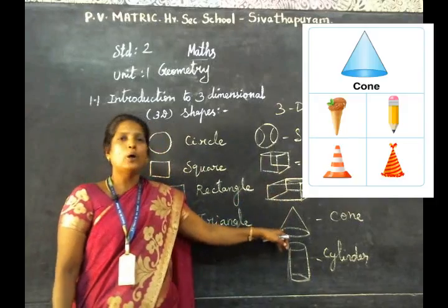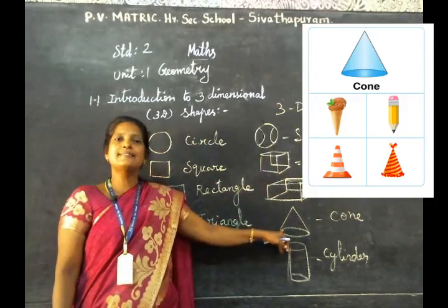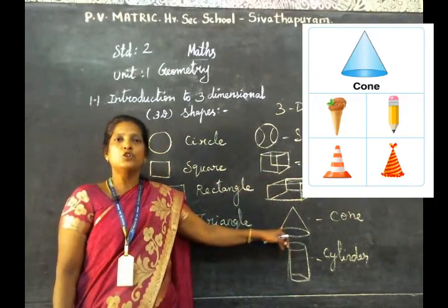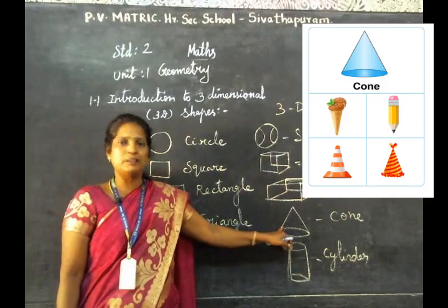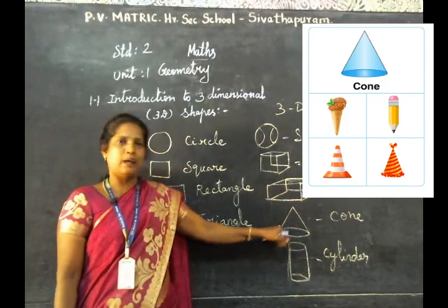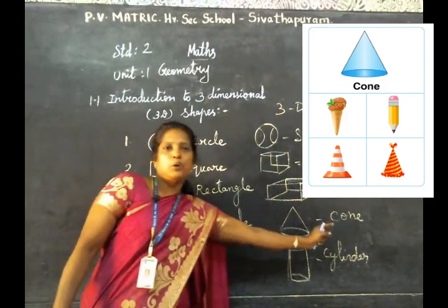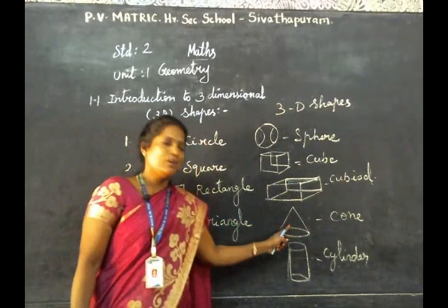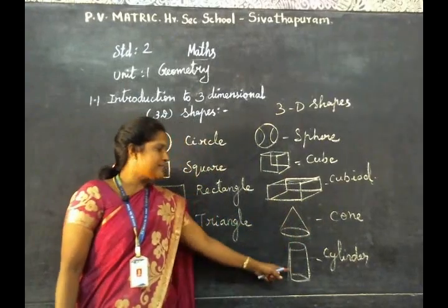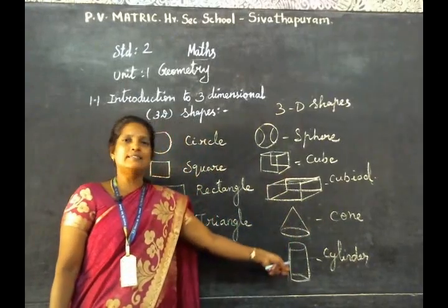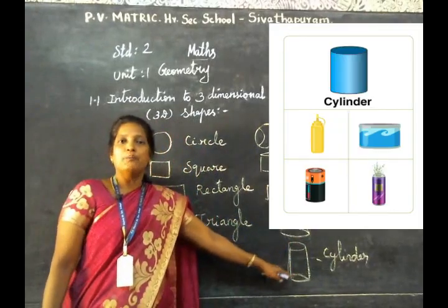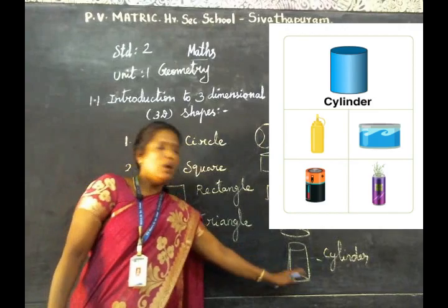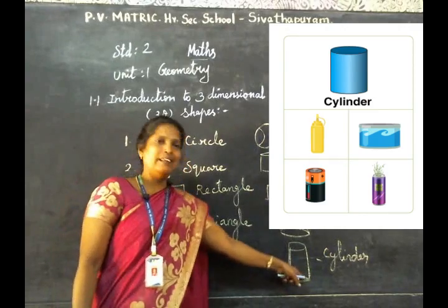Cone — ice cream cone, joker cap — these are cone shapes. Cylinder — water bottle is a cylinder shape.